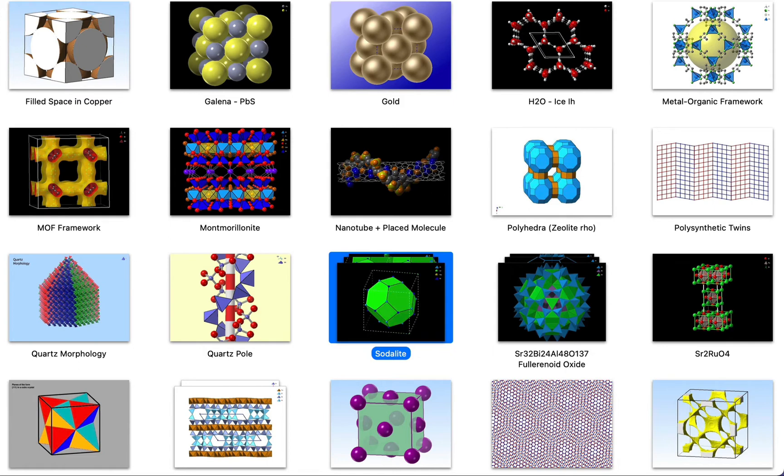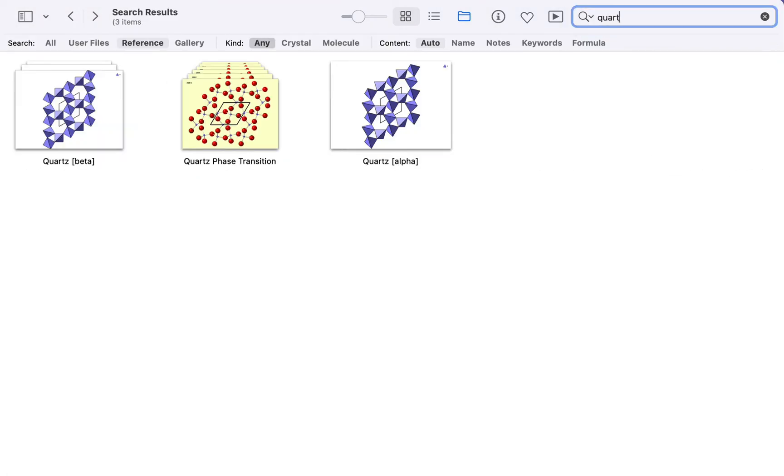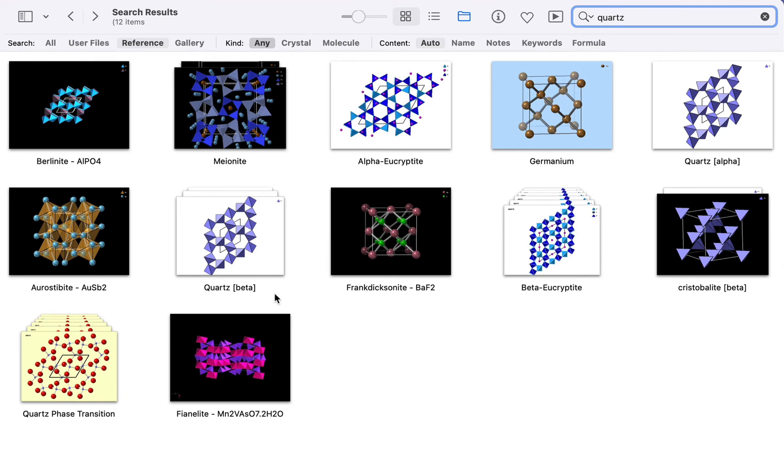Animation is particularly useful when trying to understand how structures change with pressure or temperature. Let's take a look at the structure of quartz as a function of temperature. Here's a multi-structure file showing quartz changing on heating. In fact, this file shows the alpha-beta phase transition in quartz at about 570 degrees C. We can preview it in the browser like this by moving the mouse over the thumbnail, but things really come to life in the viewer.